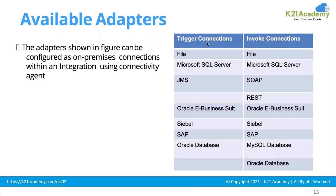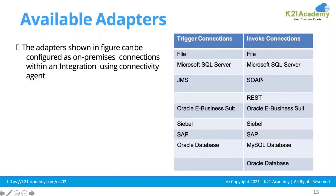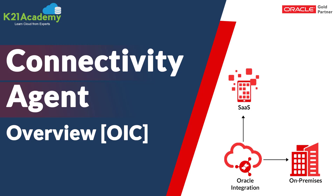There are different adapters which you can use with the agent. For example, the File adapter can be used on the trigger connection to connect to your local systems. Microsoft SQL Server can be used as a trigger or invoke — if you have an on-premise MS SQL Server, you can use the agent to connect to it. Similarly, JMS, E-Business Suite, SAP, database adapters, REST, SOAP, SQL Database, and Oracle Database — all of these adapters can use the connectivity agent.